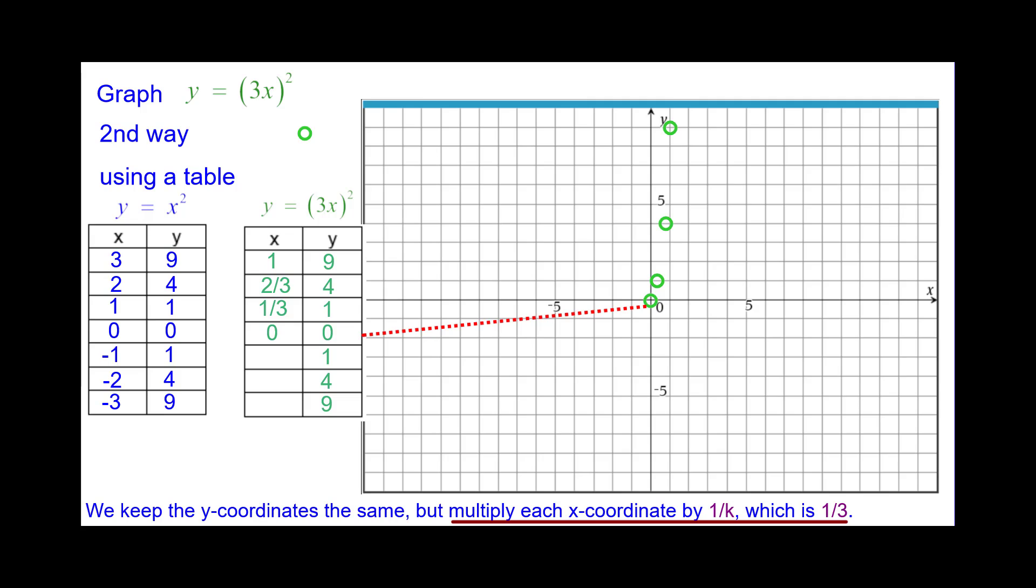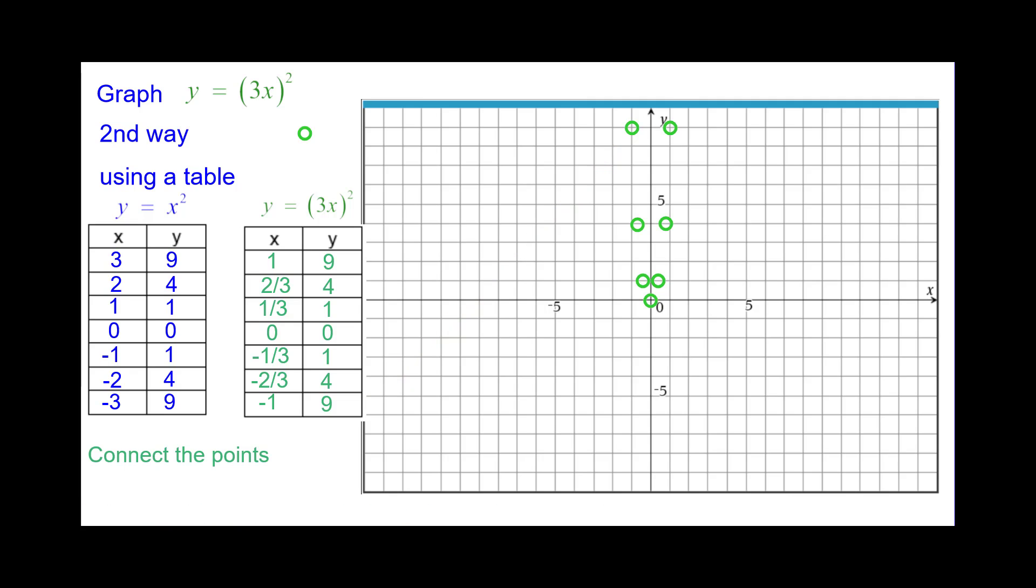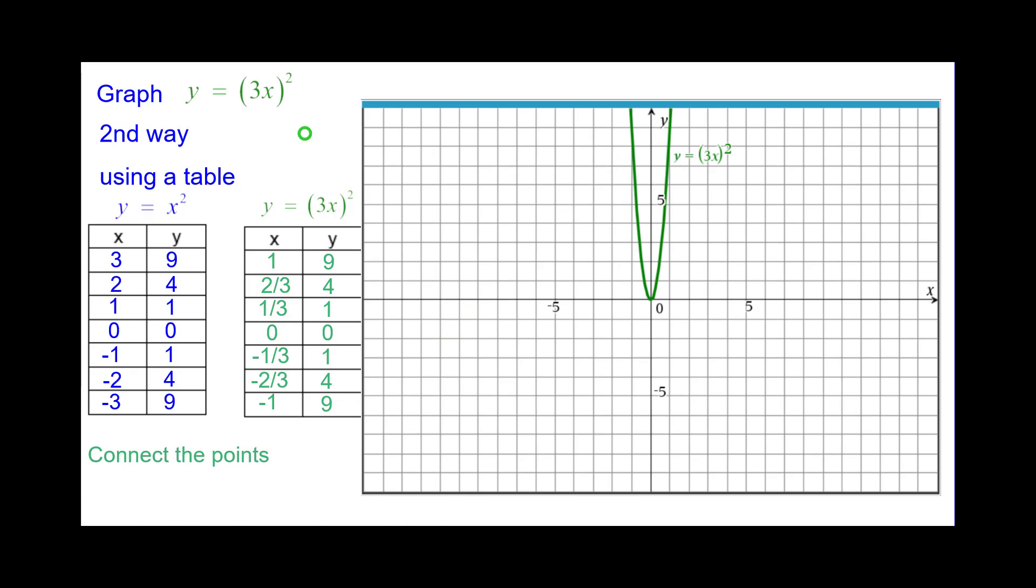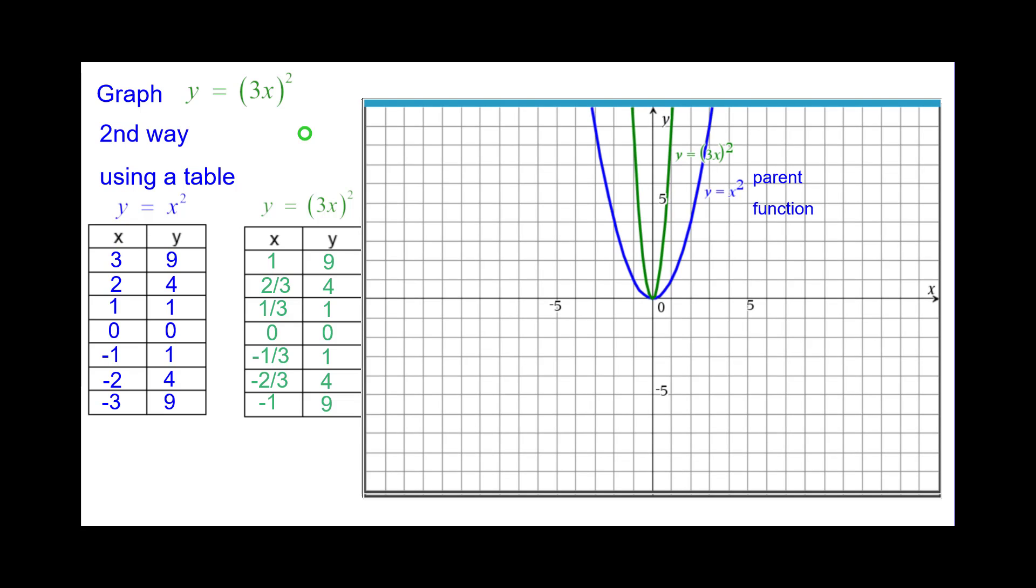Go ahead and finish the last three points. Press pause and then resume when you're ready. Connect the points and then compare it to the parent function. Note again, y equals the quantity of 3x squared is equivalent to y equals 9x squared.